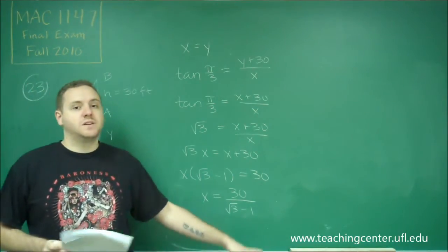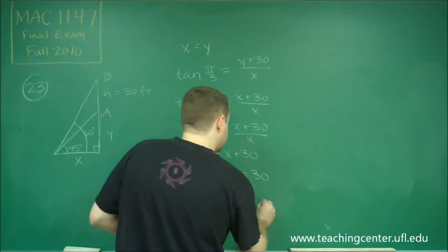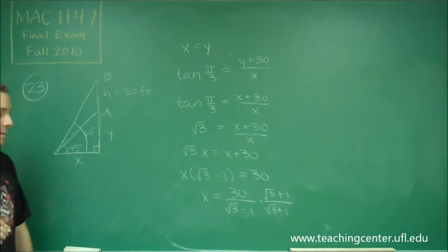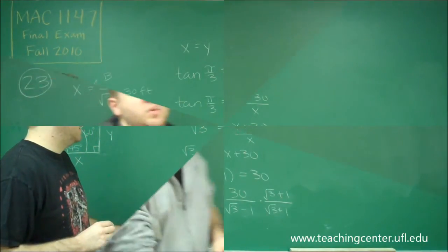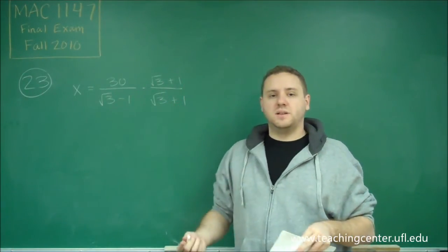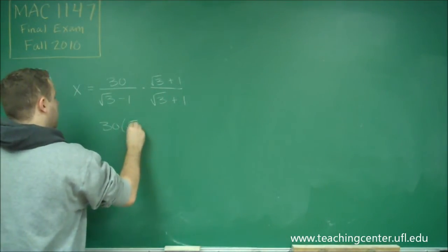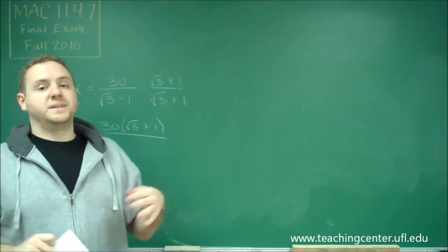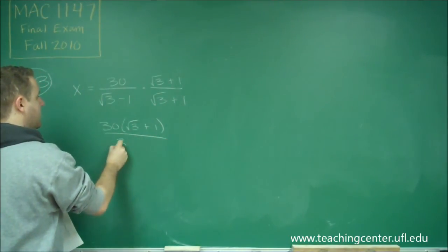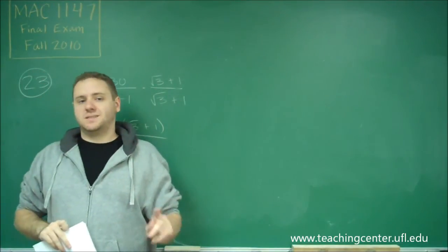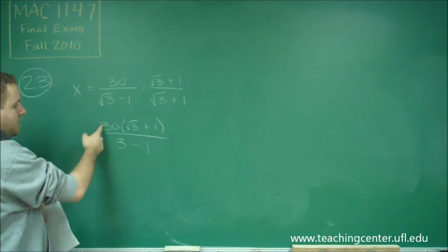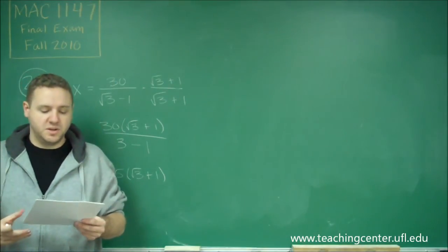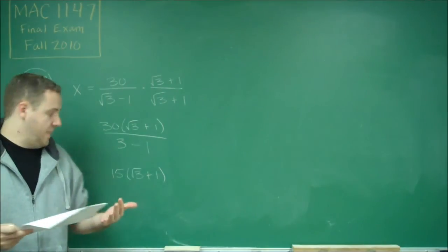We need to rationalize this, because none of the answer choices have fractions. Multiply both top and bottom by the conjugate of the denominator — square root of 3 plus 1. The numerator becomes 30 times (square root of 3 plus 1). The denominator uses difference of squares: root 3 squared minus 1 squared gives 3 minus 1, which is 2. The 2 cancels with 30 to leave 15 times (root 3 plus 1). Answer choices are rationalized, so that gives us answer choice E.